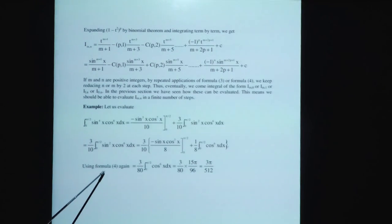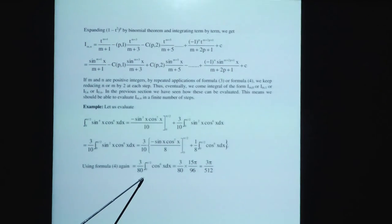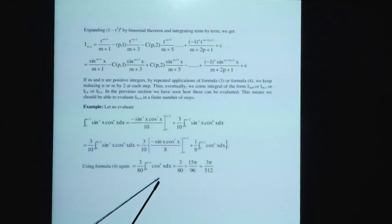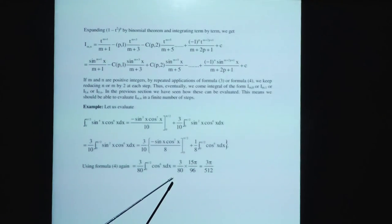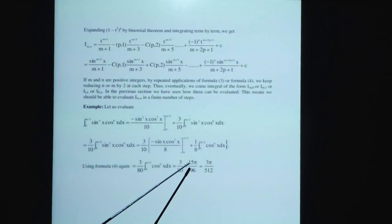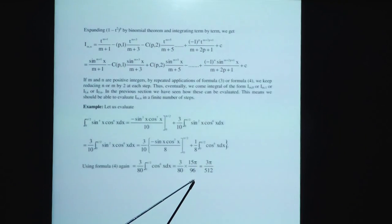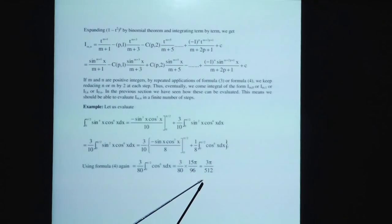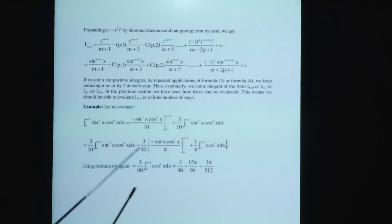Using formula 4 again, 3/8 times integration from 0 to π/2 of cos^6(x) dx = 3/8 times 15π/96. These values solve to 3π/512. That is the final solution.